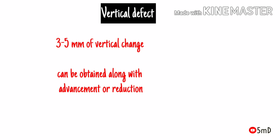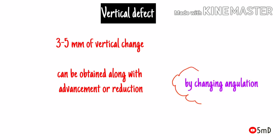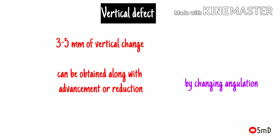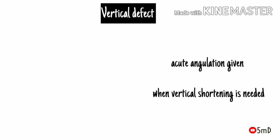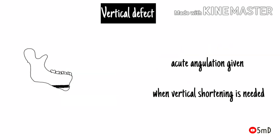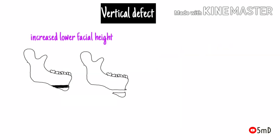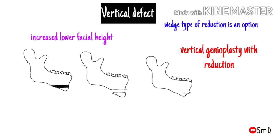When changes are needed in the vertical plane, a minimum of 3 to 5 mm of vertical change can be obtained during advancement or reduction by changing the angle of placement. When vertical shortening is needed and movement is not parallel, the osteotomy angle should be acute, and vice versa.